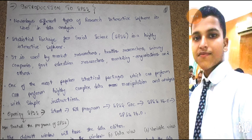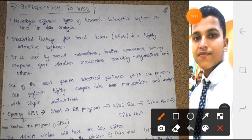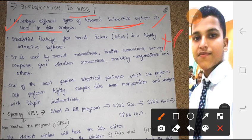So start from the bullet points. First point: nowadays different types of research interactive software is used in data analysis. So for the data analysis, there are different kinds of analysis software which are used like SPSS, like R community. These are the software which are used for the data analysis.